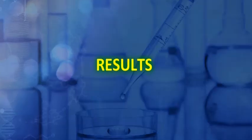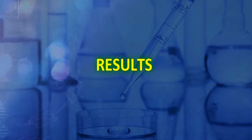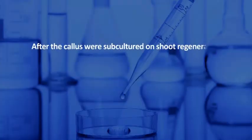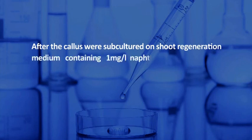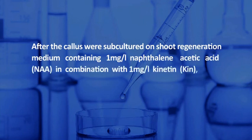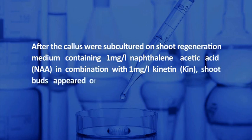Let us now see the results of the experiment. The explants produced callus on callus induction medium after 4 weeks of culture. After the calli were subcultured on shoot regeneration medium containing 1 mg per litre NAA in combination with 1 mg per litre kinetin, shoot buds appeared on the surface of the explants. The shoot buds showed the induction of rooting on MS medium supplemented with 0.5 mg per litre NAA alone. The in vitro regenerated plantlets showed 70–80% survival during transplantation.